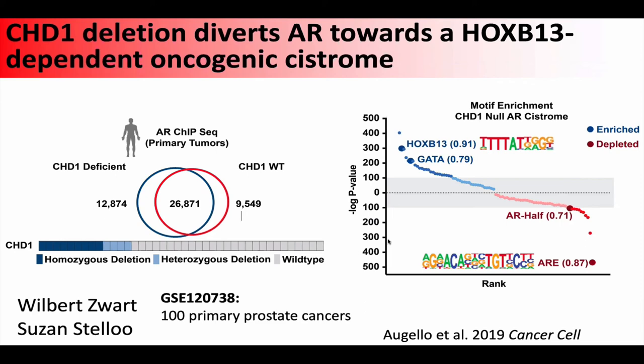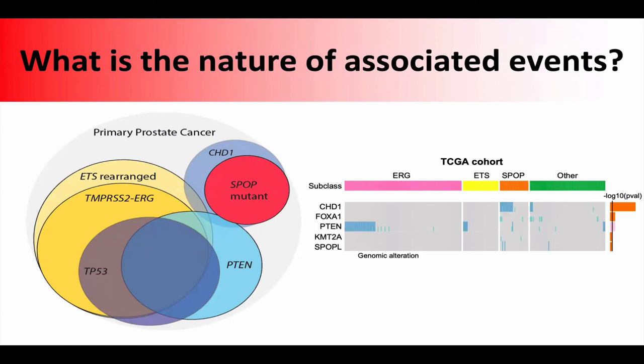We see SPOP mutations and CHD1 deletions occurring together, and similarly in ERG-positive cancers, PTEN deletions are most commonly associated. How do we understand the nature of why they're associated? One critical thing to think about is the element of time. The timeline of these events could be ordered — one thing always happens first — or they could happen in either order. Thinking about early versus late events in prostate cancer, both sequencing data and examination of cancer precursors suggest some mutations happen very early in the natural history, while some happen very late in the transition to invasive or metastatic cancer.